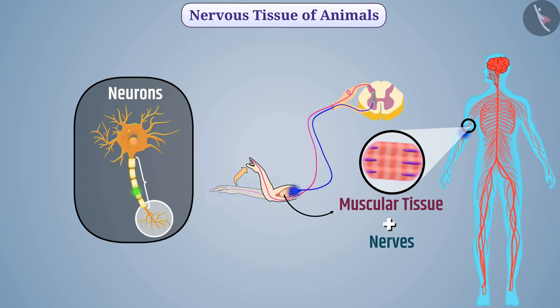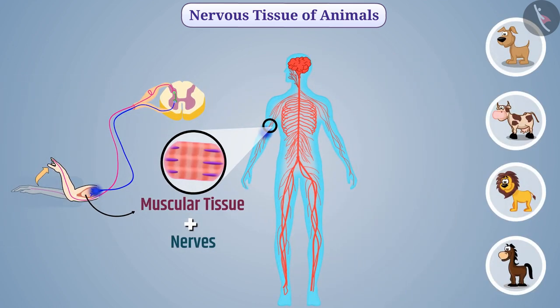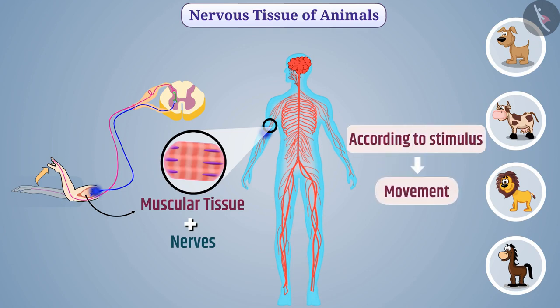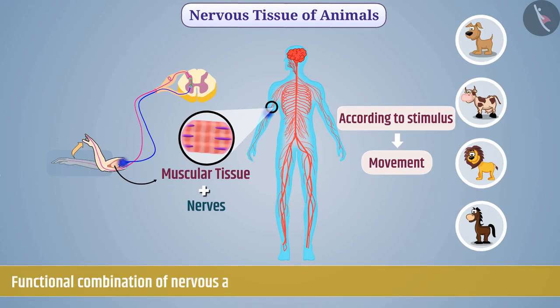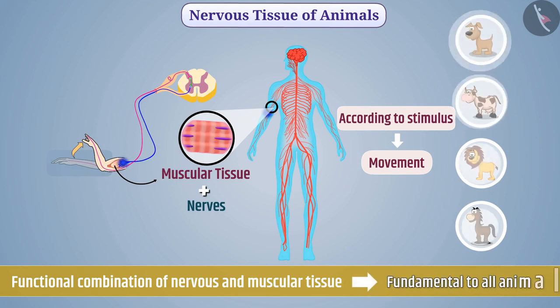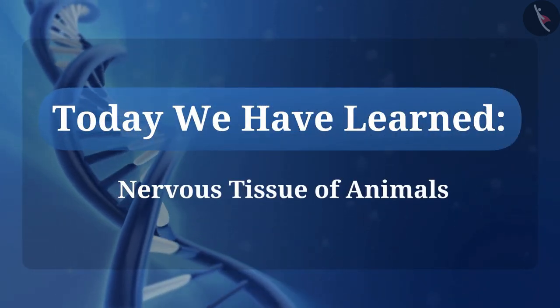The nerves are connected to muscular tissue, and information is passed to muscular tissue, causing movement. In this way, with the help of nerve impulses, we can move muscles according to our wish. The functional combination of nervous and muscular tissue is fundamental to all animals.